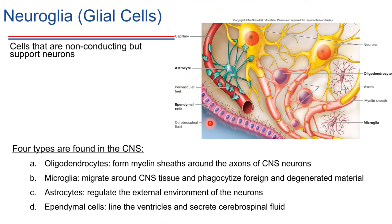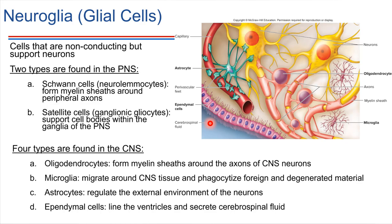It's a little bit different in the peripheral nervous system. In the peripheral nervous system, there are just two main types of supporting cells — neuroglia. We've got Schwann cells, which in the peripheral nervous system are the ones that make up the myelin sheaths. Oligodendrocytes in the CNS, Schwann cells in the PNS. And also in the peripheral nervous system, we have satellite cells — other supporting cells that we're not going to go into a whole lot of detail on, but good to know that they exist.